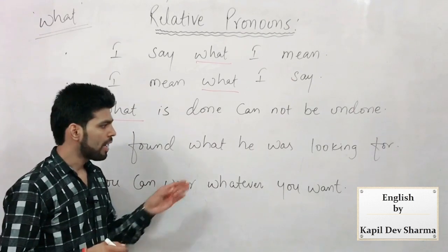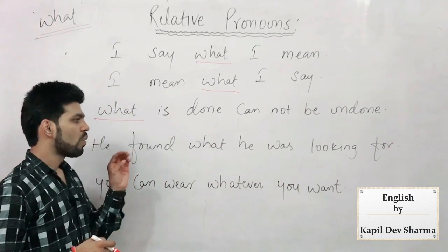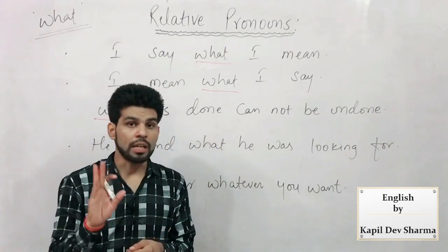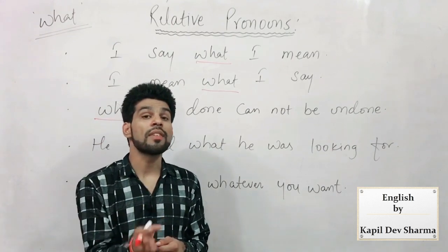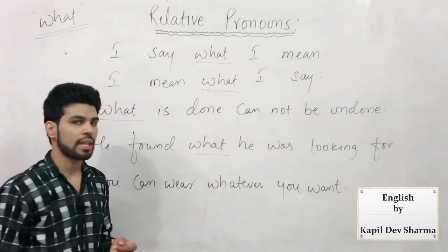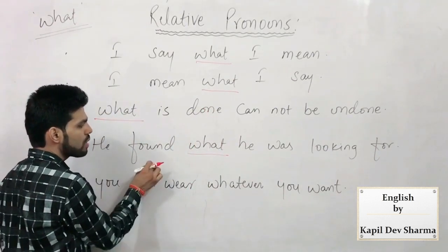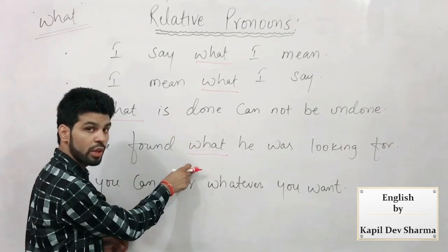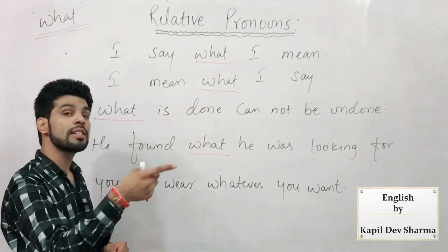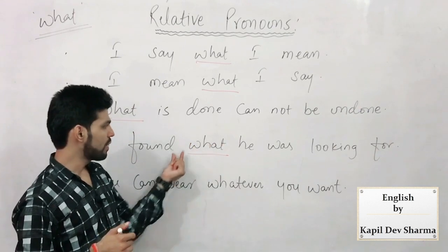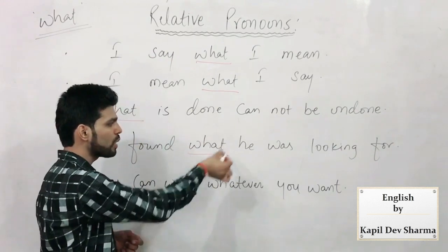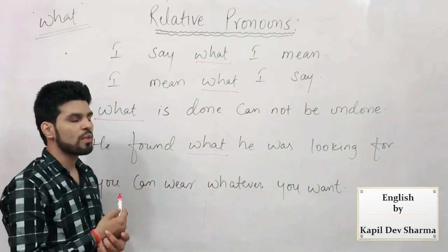'He found what he was looking for' — usse woh mil gaya jo woh dhund raha tha. Sentence mein specify nahi hai usse kya mila ya woh kya dhund raha tha. Agar main likhta 'he found the pen' — 'which he was looking for'; 'he found the person' — 'whom he was looking for' (objective case, isliye whom). Agar pen ya book hogi toh 'which' aayega. Mujhe nahi pata usse kya mila — isi 'kya' ko dikhane ke liye aapke shabd mein ek aisa relative pronoun jiske paas woh cheez hai hi nahi jisse woh relate karta hai — 'what' ka istamal karo.